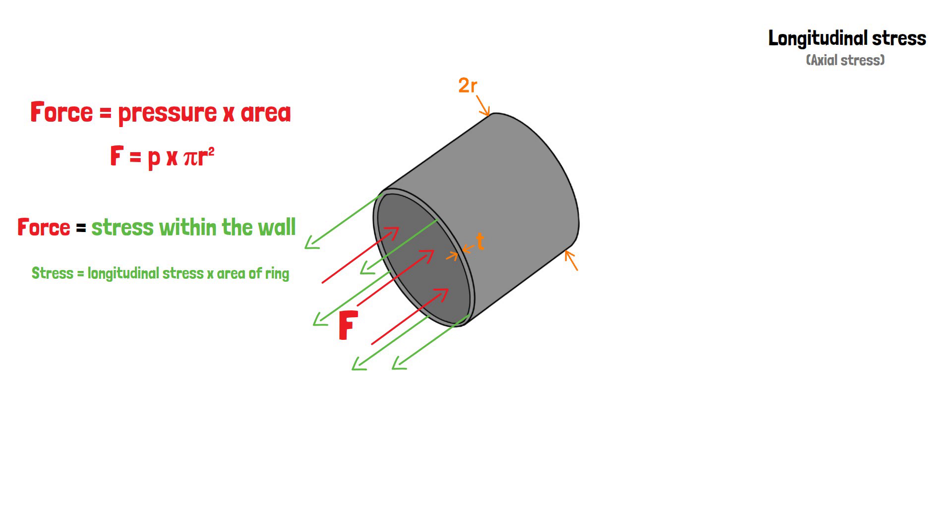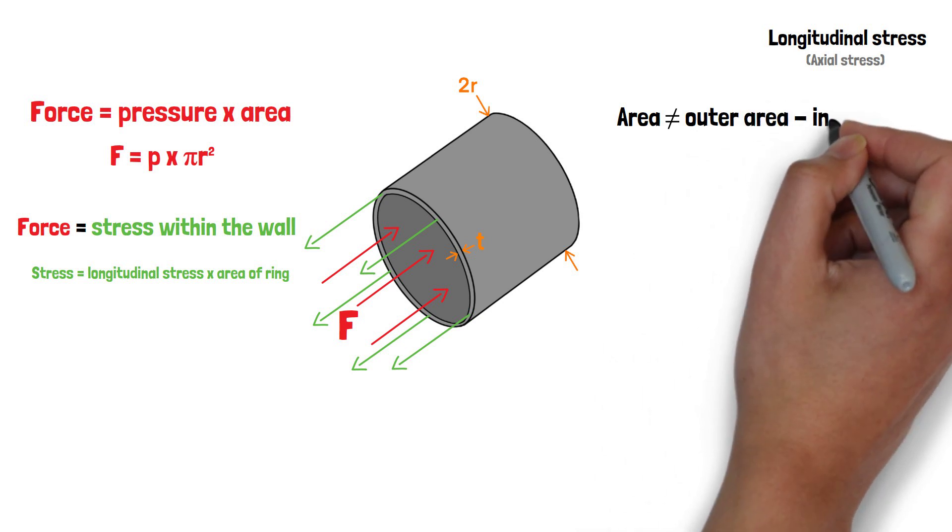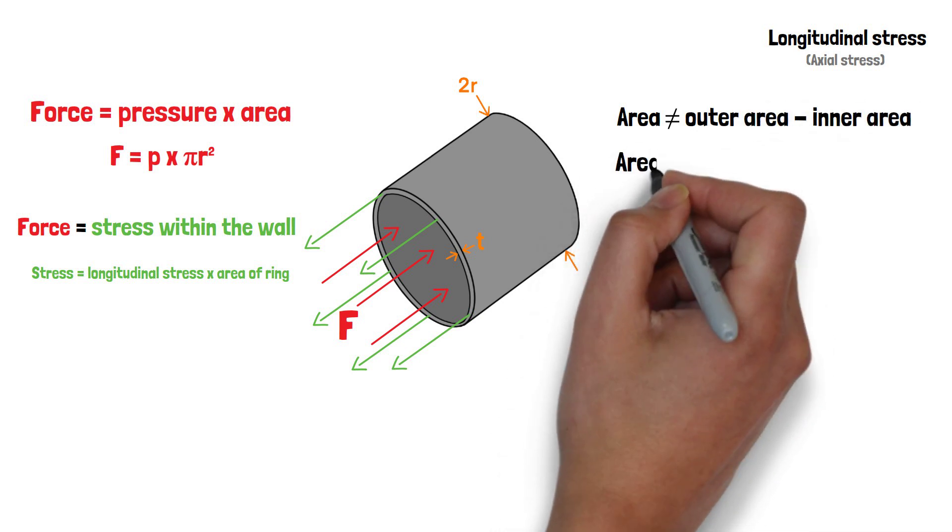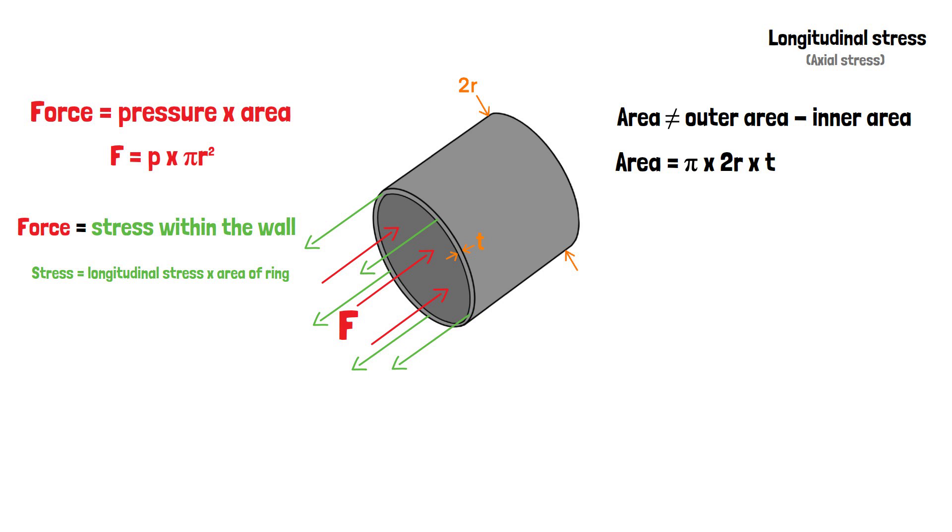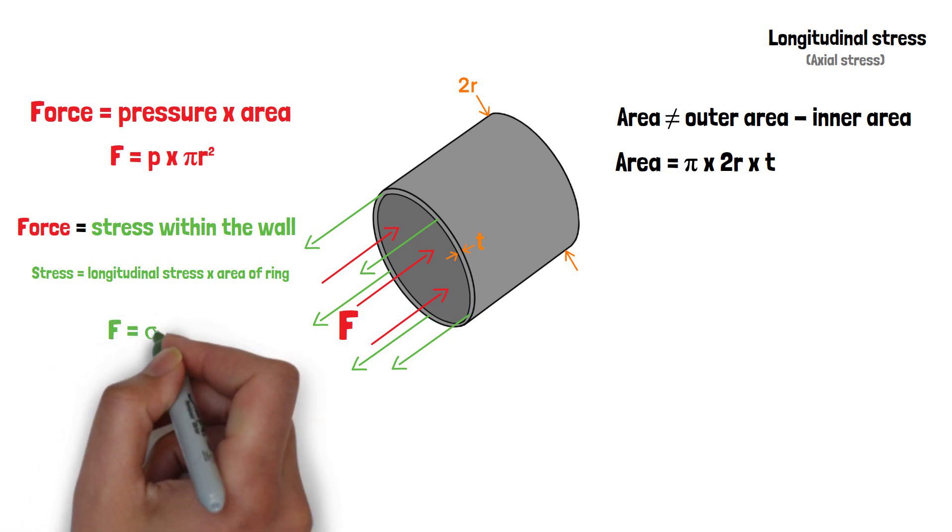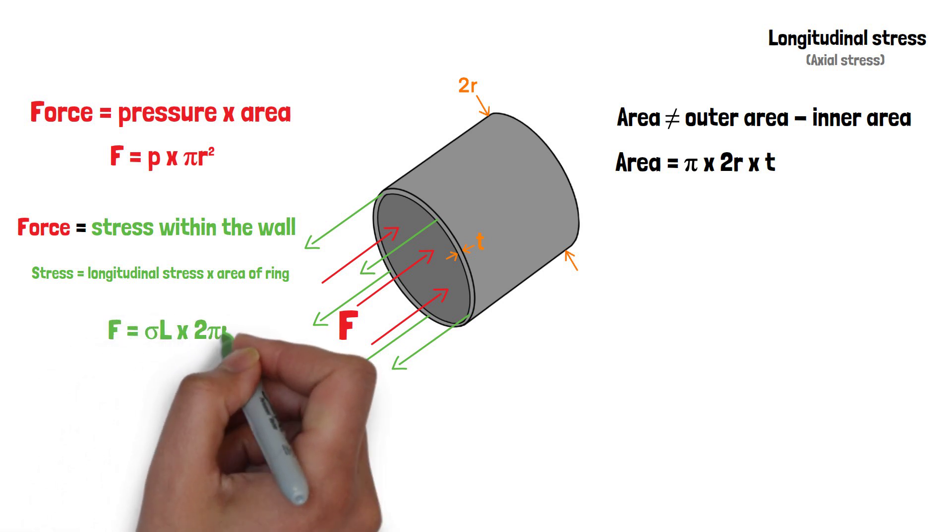Since we're dealing with thin walled cylinders, we don't calculate area using the standard formula of outer area minus inner area, but by pi times 2R times T. This can be written as F equals sigma L times 2 pi RT.